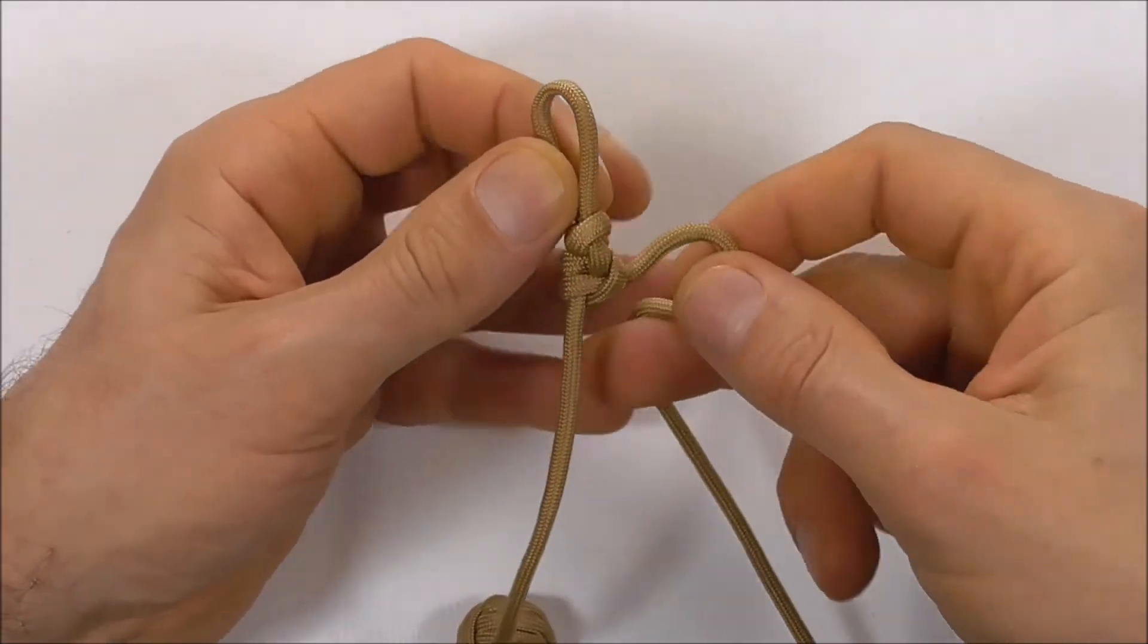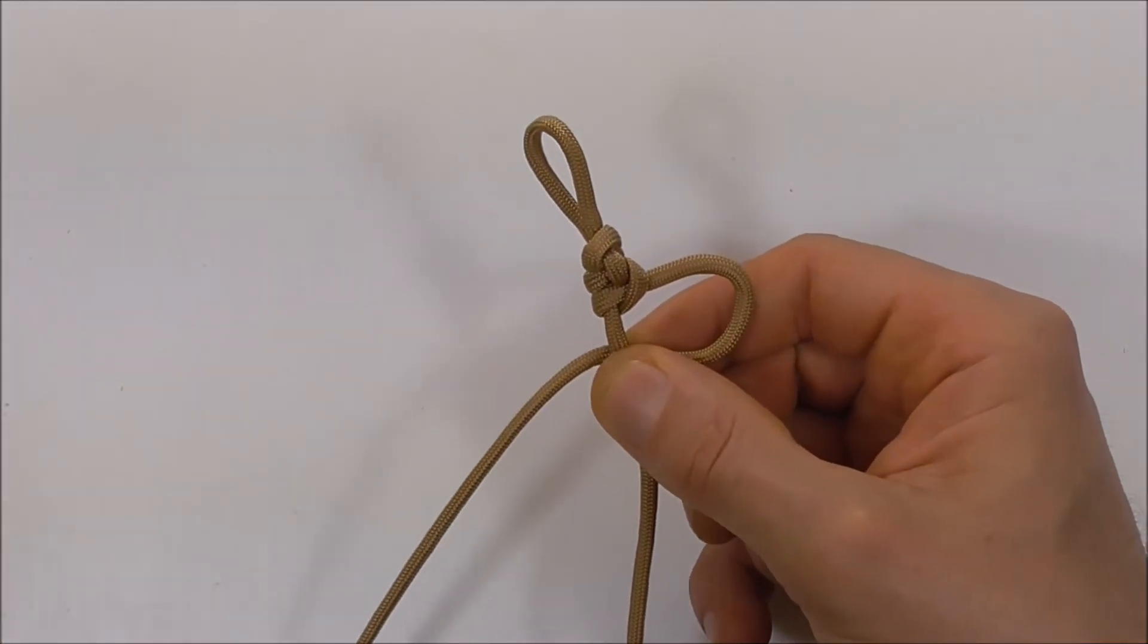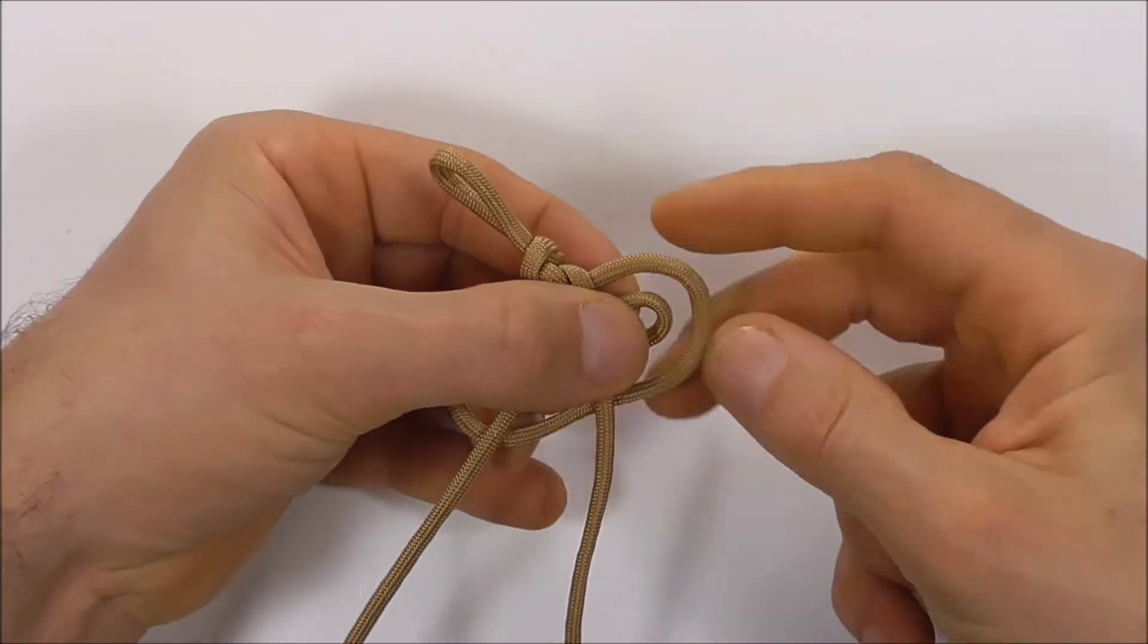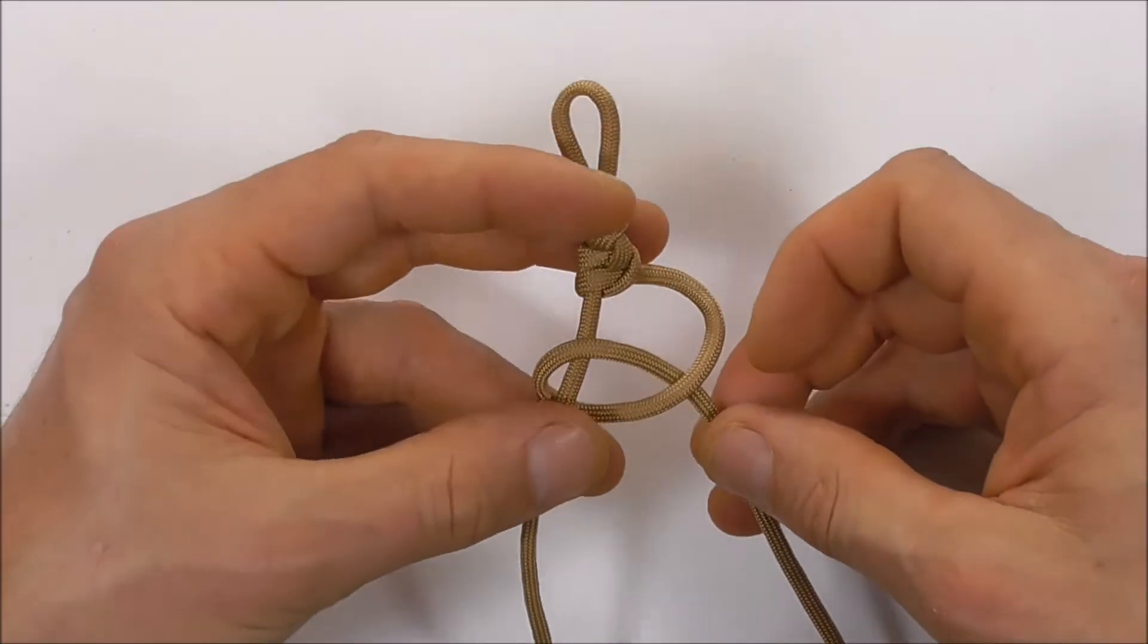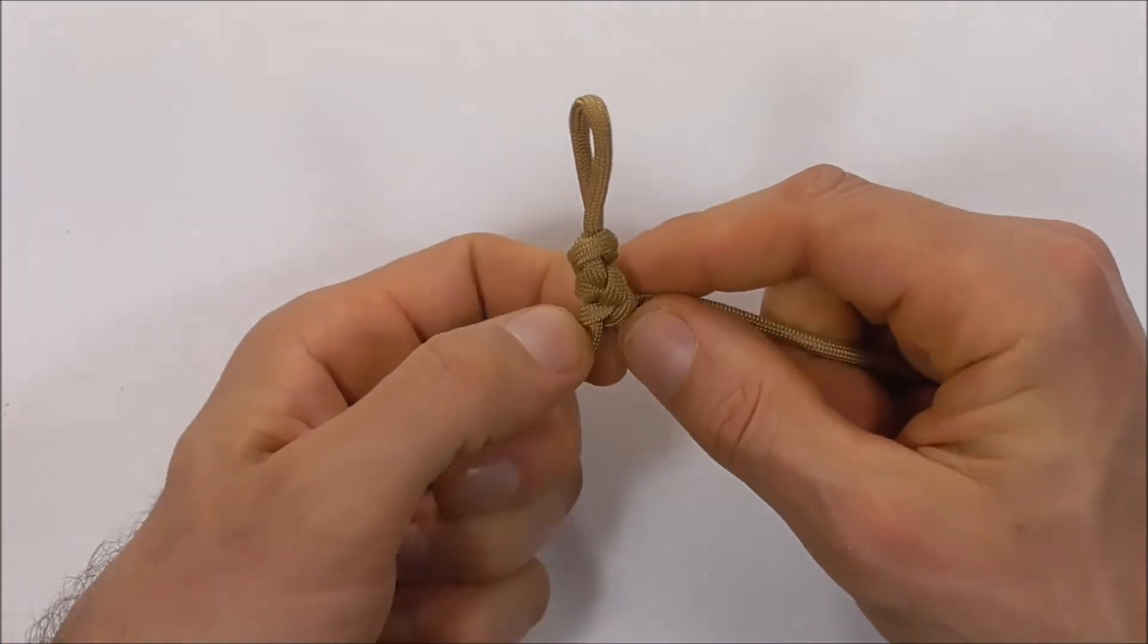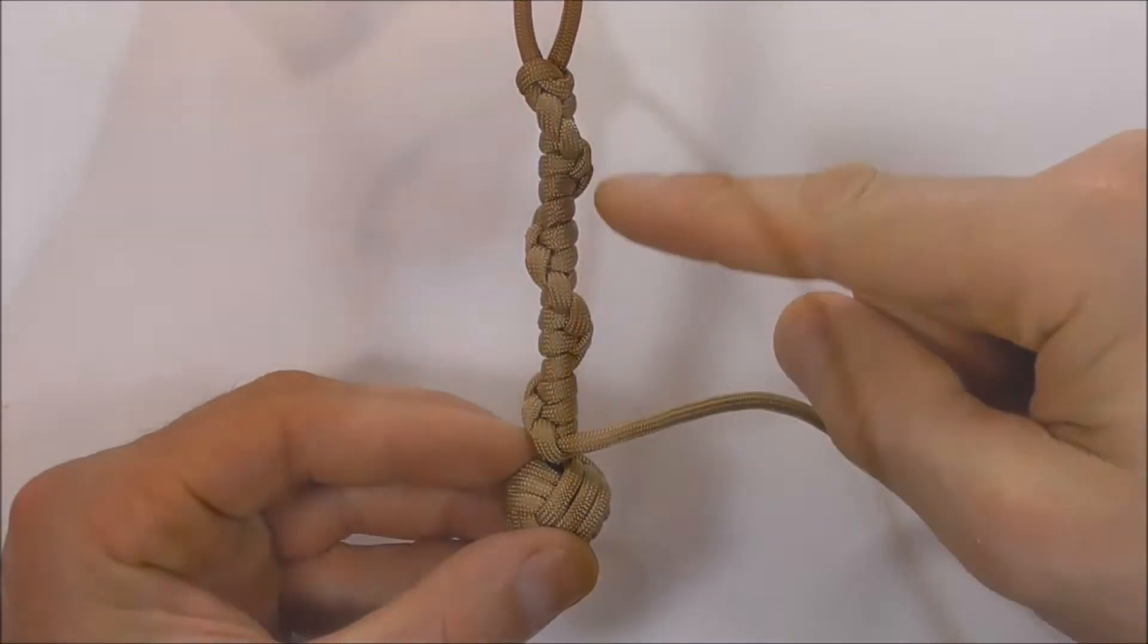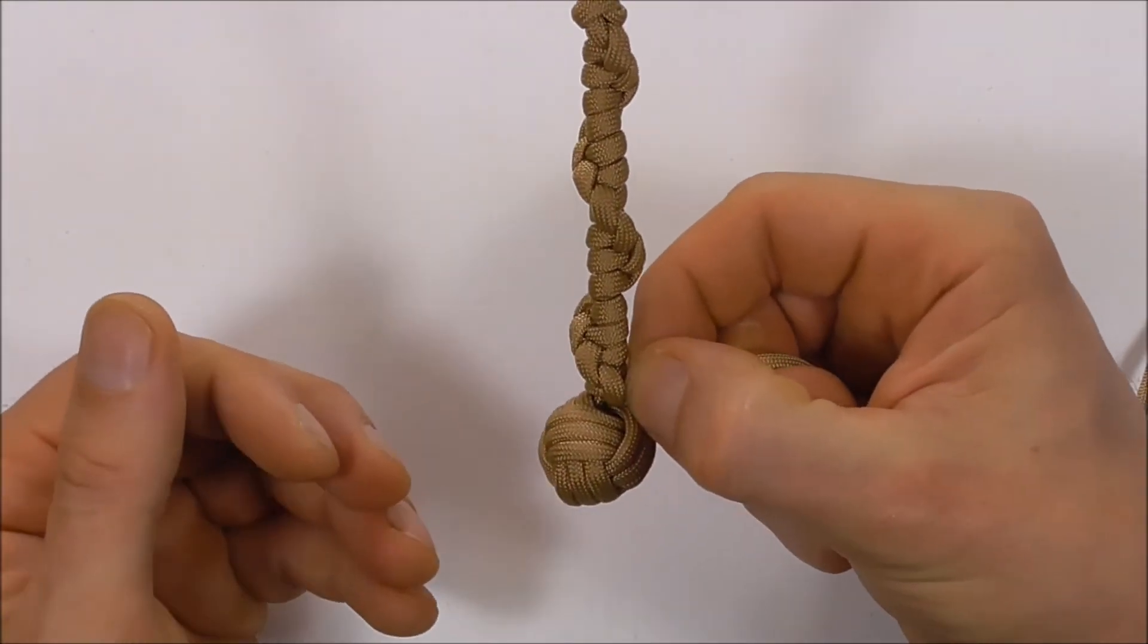So again, we're going to go underneath and around and down through that loop. And then just keep repeating that pattern until you get down to the monkey's fist. So once you've finished your hitching all the way down, you can cut and singe the end here.